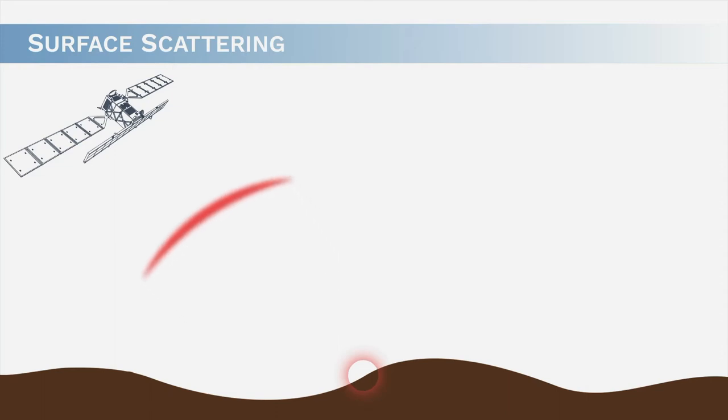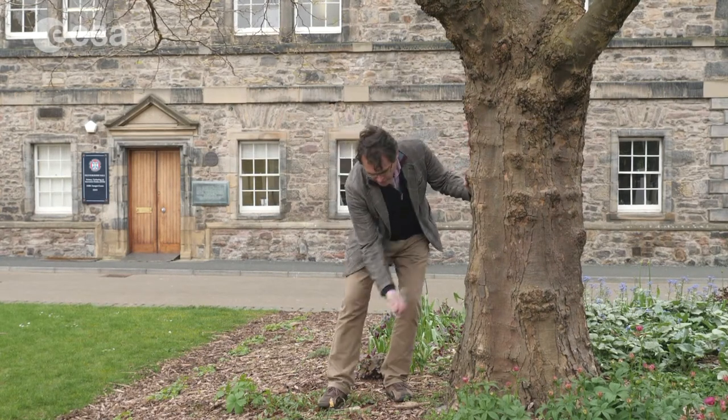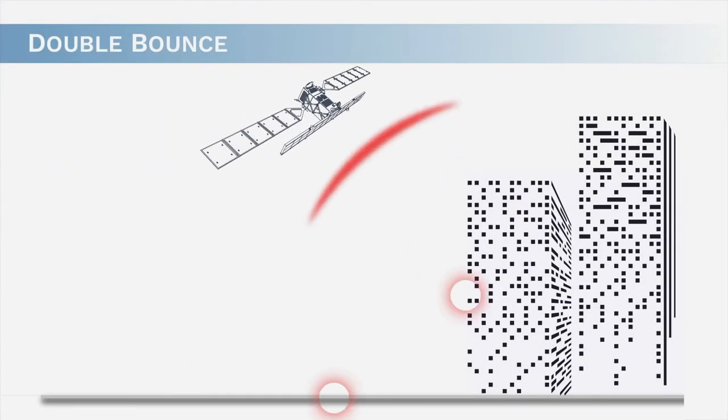How much it scatters depends on the material properties and surface roughness. A second scattering mechanism is the double bounce, where scattering occurs between two objects — for example, a tree trunk and the ground surface — back to the sensor. This is particularly strong when you have a vertical and a horizontal scatterer at 90 degrees to each other, producing a very strong backscatter response. It's also known as a dihedral corner reflector.